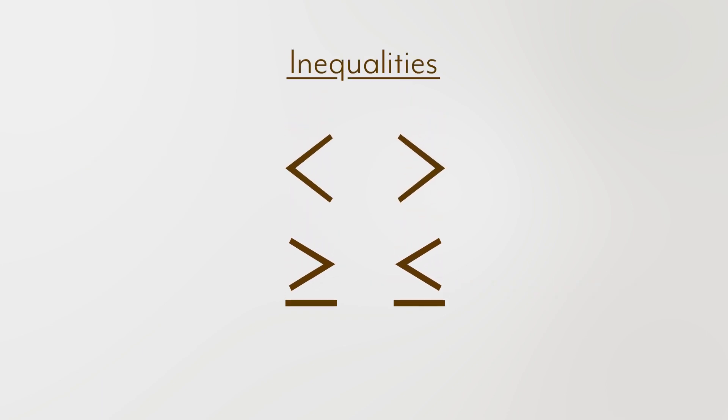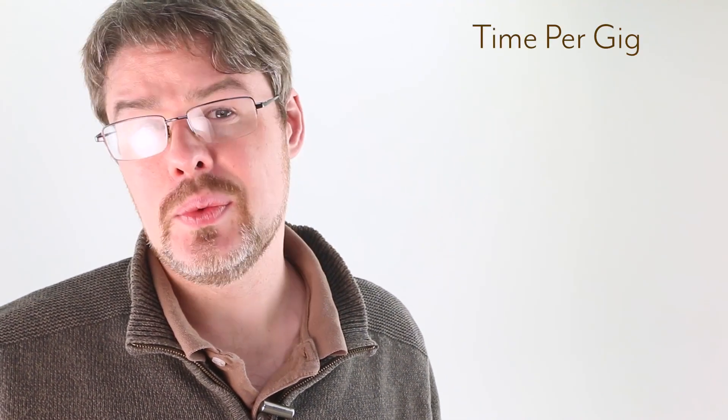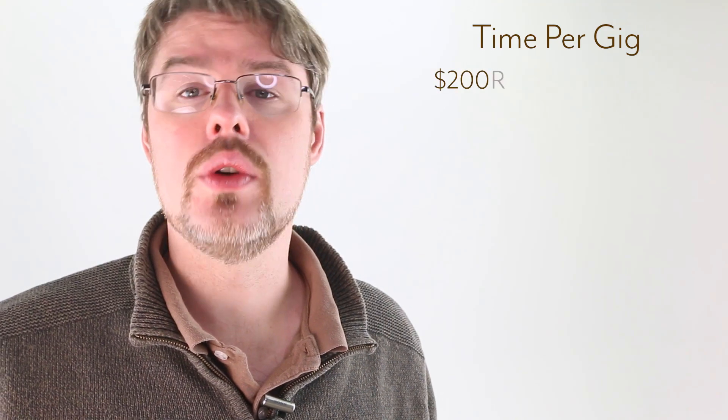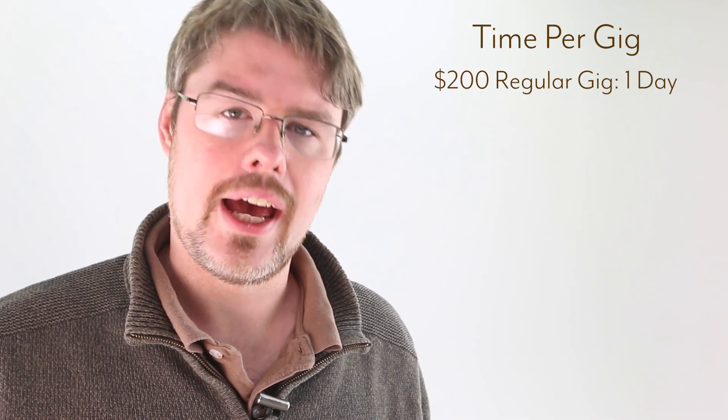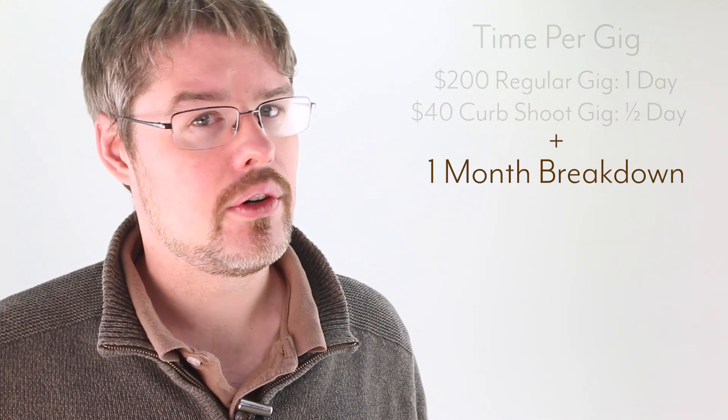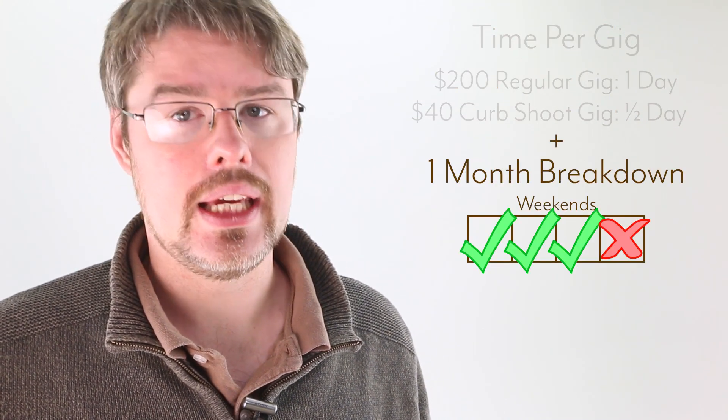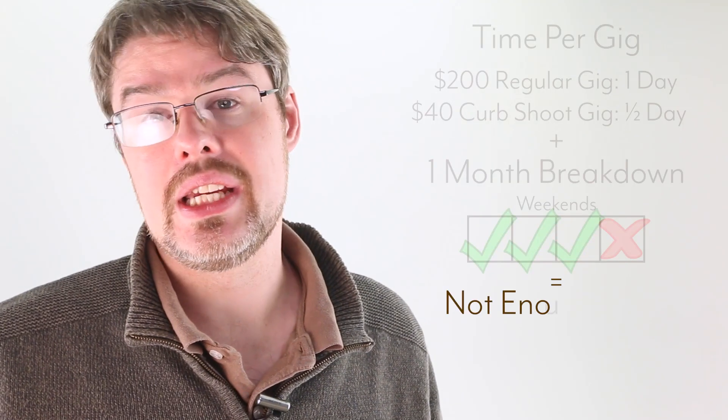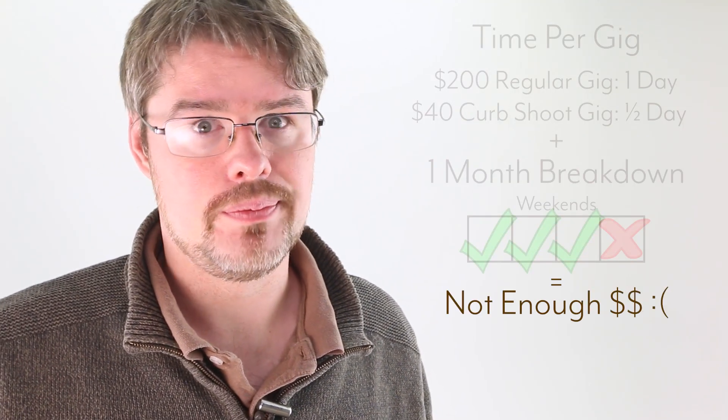We can now use these four symbols to build inequalities in various situations. Now, did we need to do all of that for this particular situation? Well, probably not. But now that we have, we can ask all sorts of questions that might well guide our actions in terms of choosing to accept or turn down gigs. It would take me one full day to do a $200 regular gig, or half that to do a $40 curb shot gig. I could spend three out of four weekends in a month doing gigs. Unfortunately, I wouldn't be able to break even each month as a result. So I ended up not doing it.